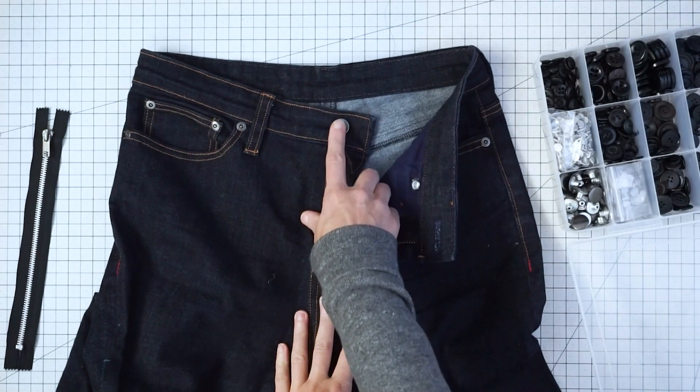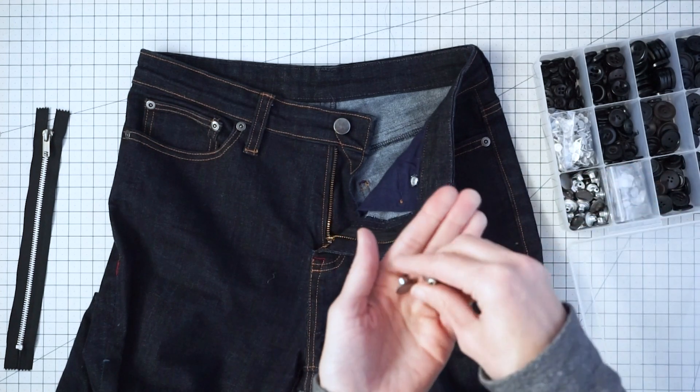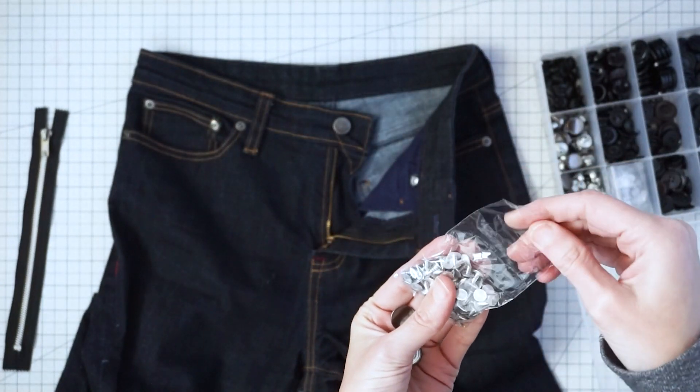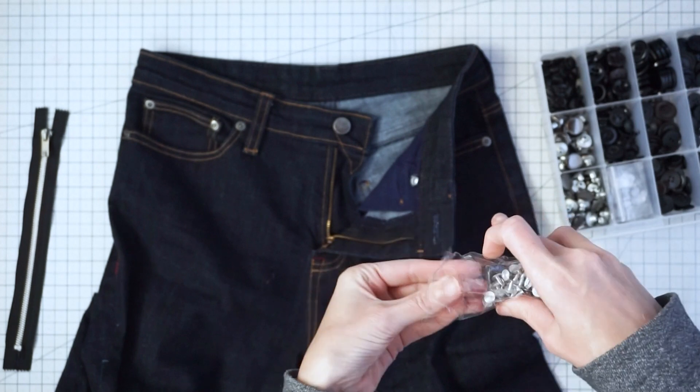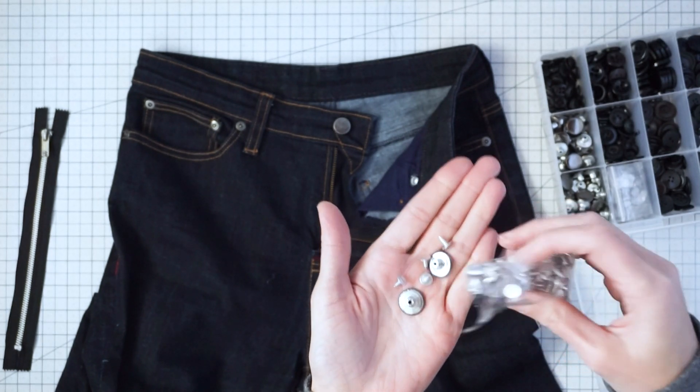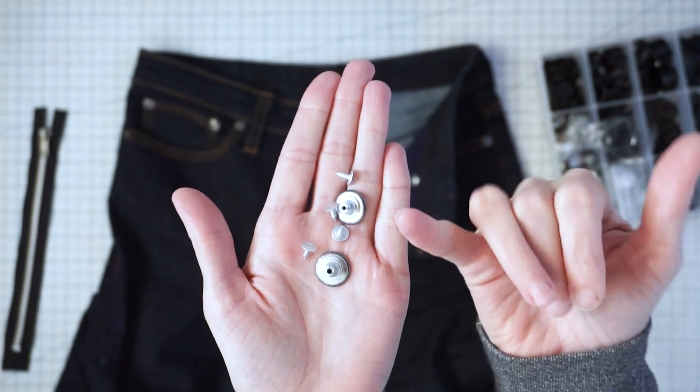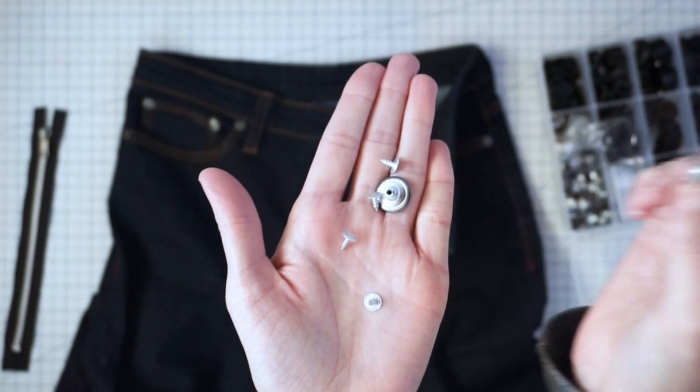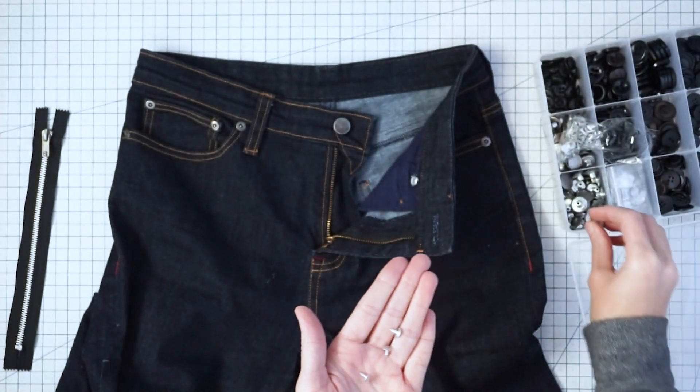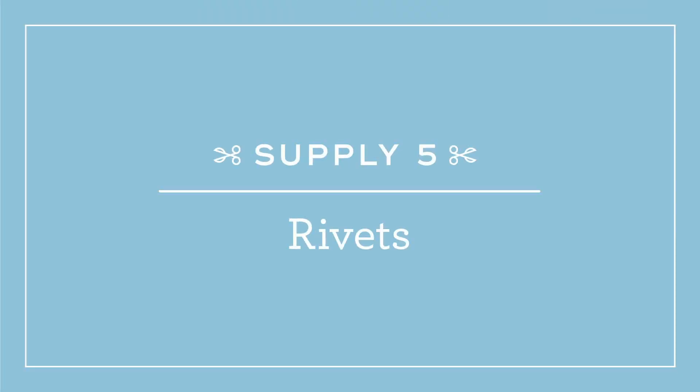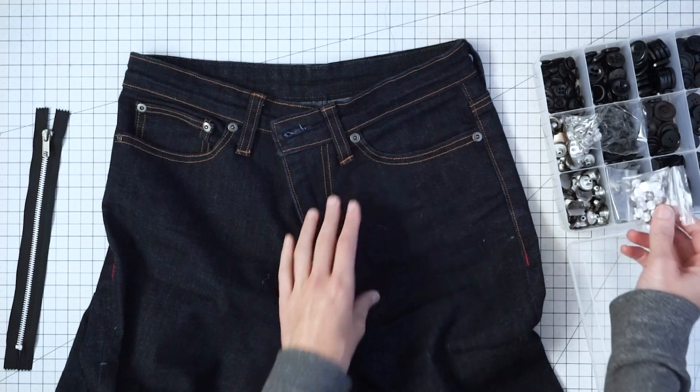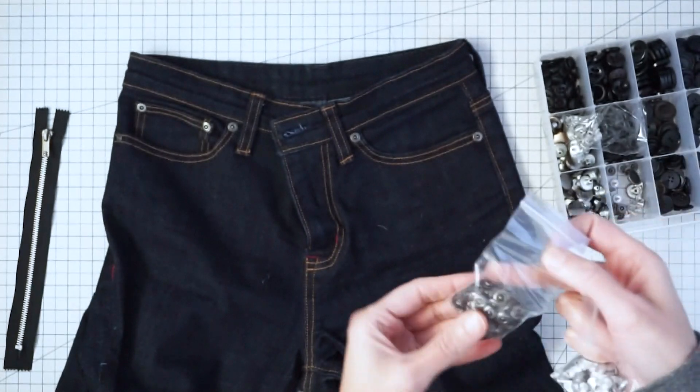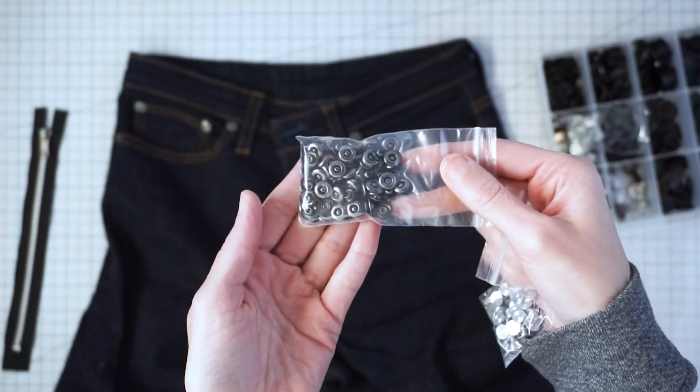If you're not doing a zip fly, you can do buttons all the way down. These buttons are metal and they have a hole on one side, and then you have these little posts that are pokey. This pokey one comes up from the bottom, and then you hammer this button on top, and they really stay on very well. You're also going to have rivets, and those work in a very similar way. You have the little posts and then these rivets, and you hammer those together.